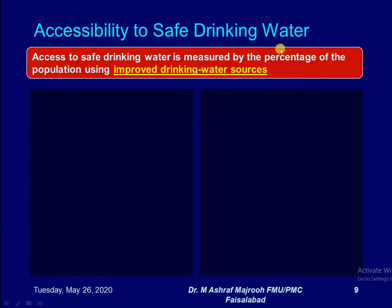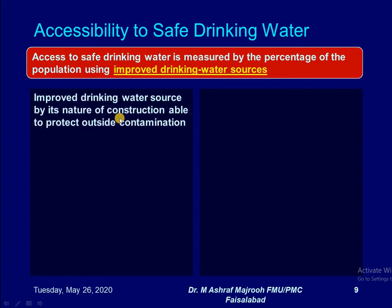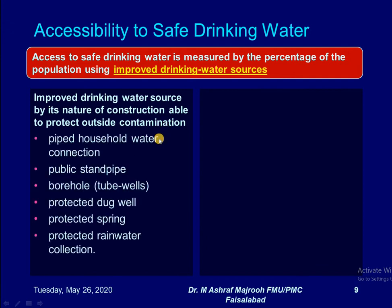Access to safe drinking water is measured by the percentage of the population using improved drinking water sources. Improved drinking water sources, by their nature of construction, are able to protect against outside contamination — especially fecal contamination. These include: piped household water connection, public stand pipe, borehole (tube wells), protected dug wells, protected spring, and protected rain water collections.